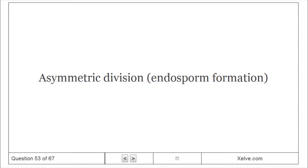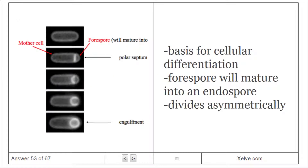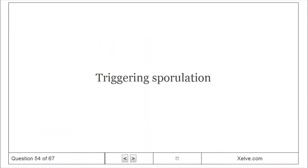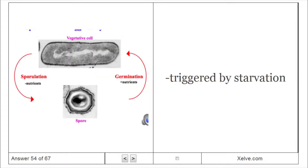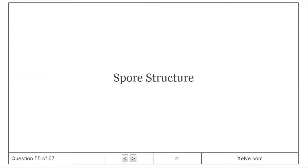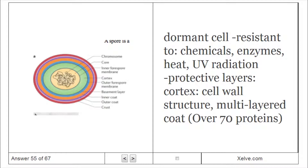Asymmetric division is the basis for cellular differentiation. The spore matures into an endospore via asymmetric division. Sporulation is triggered by starvation. Spore structure: the dormant cell is resistant to chemicals, enzymes, heat, and UV radiation, protected by multiple layers including the cortex, cell wall structure, and a multi-layered coat made of over 70 proteins.